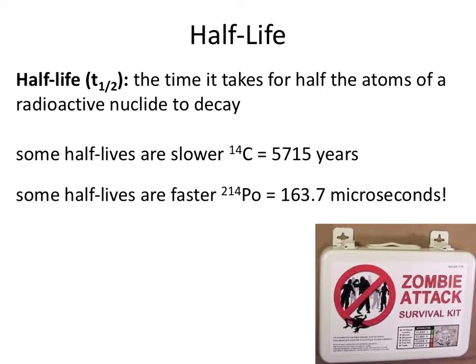So let's talk about half-life. Half-life is represented by T with a subscript one-half. Half-life is the time it takes for half of the atoms of a radioactive nuclei to decay. So if I have a sample, the time it takes for half of the atoms in that sample to decay into something else is going to be your half-life. Some half-lives are really, really slow — carbon-14 has a very long half-life, and we use carbon-14 for radiometric dating to figure out how old bones and artifacts are. There are also radioactive nuclei that decay really, really quickly — polonium-214 exists for almost a couple hundred microseconds.